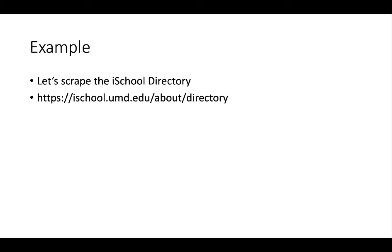Let's go into an example to see how this works. First, we're going to scrape the iSchool directory. We're not actually going to write the code here — we're just going to look at what that directory looks like, what the links are like, how we might follow those and compile a list of links, and then what information we'll actually extract from each profile page.